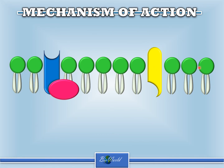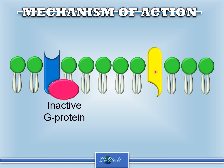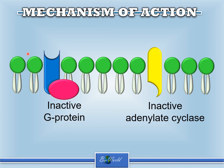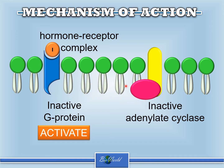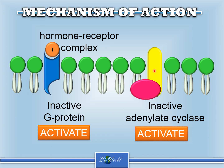This is a detailed diagram of the plasma membrane with the receptor for insulin. On the inner side of the plasma membrane, there are two other proteins to introduce: one is the inactive G protein that is attached to the receptor, and we have an inactive adenylate cyclase enzyme located nearby. When the insulin binds to the receptor and forms the hormone receptor complex, it will actually activate the G protein. The active G protein will then move towards the inactive adenylate cyclase, and when it binds to it, the adenylate cyclase enzyme becomes activated.